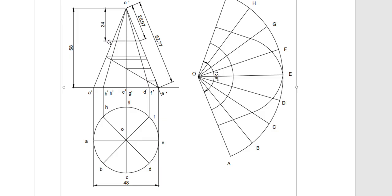Since the first section plane is parallel to the ground, measure the distance from the apex to the cutting point on the extreme generator — that distance is approximately 26 mm. Take 26 mm as radius and from center O draw an arc of 26 mm radius. This right-side extreme generator, which is of length 62.77 mm, is the true length line. Each point on the section planes must be projected to this true length generator.